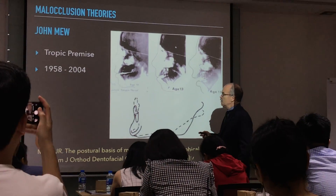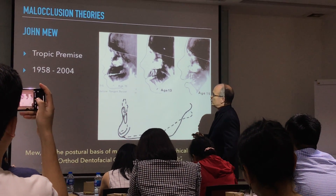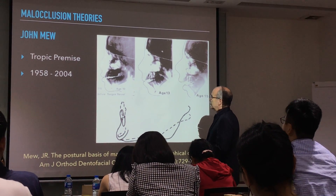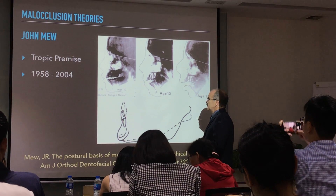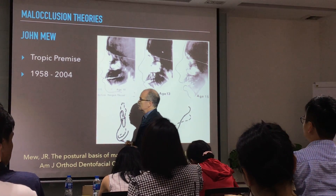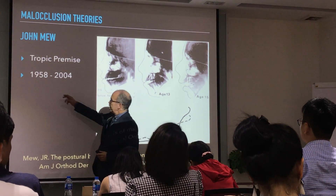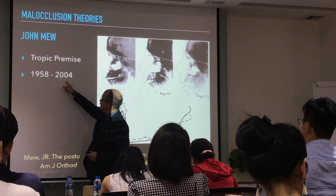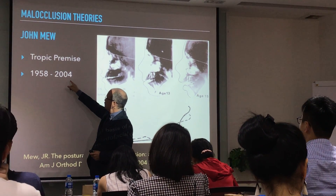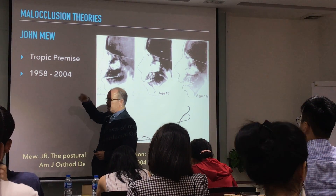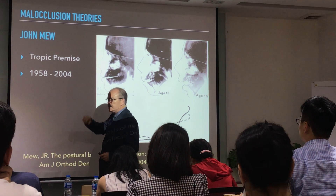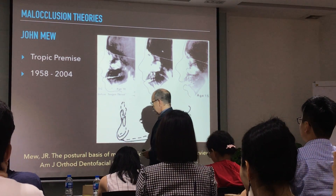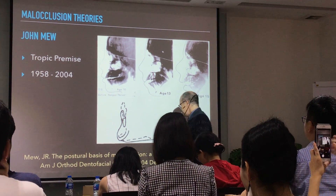For example, if you lose your eye in an accident, the orbital part is not going to develop well. If you lose your temporal muscle in an accident, your coronoid process is going to disappear. Because function explains morphology.